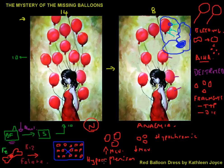Hypersplenism may also lead to a decrease in platelet count or white blood cell count. It's important to remember: we have a factory, storage, loss, and destruction. If all blood counts are low — red cells, platelets, and white blood cells — the problem is very likely in the factory, as it is uncommon for all counts to be low due to destruction alone. Occasionally all three are low with hypersplenism, but that is much less common.